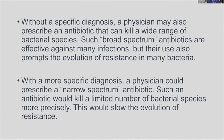Without a specific diagnosis, a physician may prescribe broad-spectrum antibiotics that are effective against many infections, but their use also prompts the evolution of resistance in many bacteria. The bacteria can get mutated easily because they want to survive — this development of resistance is part of their survival mechanism. With a more specific diagnosis, a physician could prescribe a narrow-spectrum antibiotic, which would kill a limited number of bacterial species and more precisely slow the evolution of resistance.